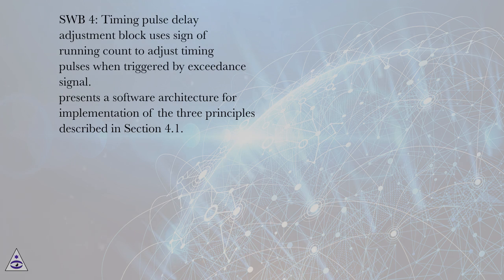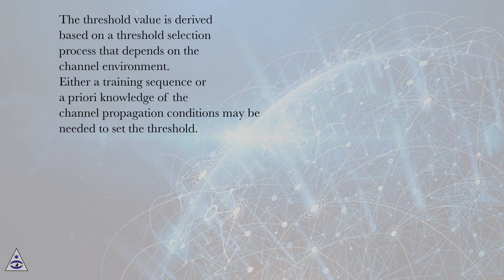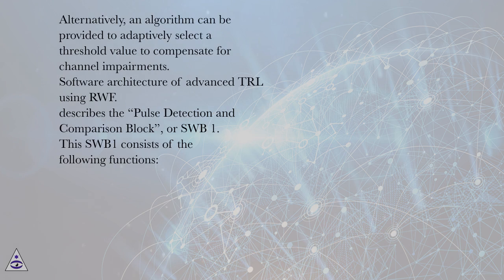This presents a software architecture for implementation of the three principles described in Section 4.1. The threshold value is derived based on a threshold selection process that depends on the channel environment. Either a training sequence or a priori knowledge of the channel propagation conditions may be needed to set the threshold. Alternatively, an algorithm can be provided to adaptively select a threshold value to compensate for channel impairments.